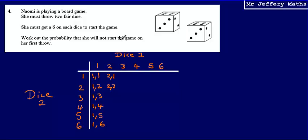We're asked to work out the probability that she will not start the game on her first throw. To start the game, she must get a six on each dice. There's only one way in which that can happen. So the probability that she does not start the game is going to be quite high. How high is it going to be?